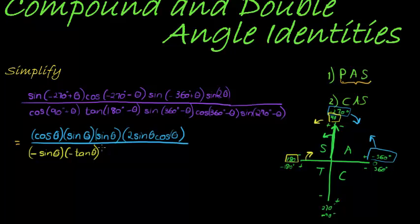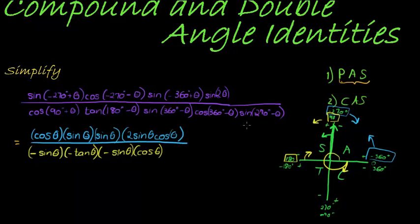How about sine 360 minus. 360 is all the way here, minus is in the opposite direction, fourth quadrant where sine is negative sin θ, again my angle is made with the x-axis. Cos of 360 in that quadrant is positive, so that changes to cos of θ.